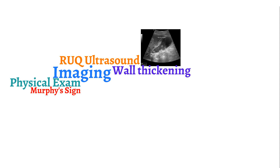A sonographic Murphy sign is when a sonographer tries to elicit the Murphy sign while visualizing the gallbladder. A sonographic Murphy sign is more accurate because the ultrasound confirms that the gallbladder is actually being pressed on.